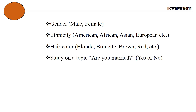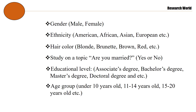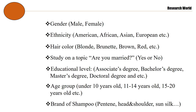Further examples include: a study on a topic such as 'Are you married?' with yes or no answers; educational level — associate's degree, bachelor's degree, master's degree, doctoral degree, etc.; age group — under 10 years old, 11 to 14 years old, 15 to 20 years old, etc.; and brand of shampoo — Pantene, Head and Shoulders, Sunsilk.